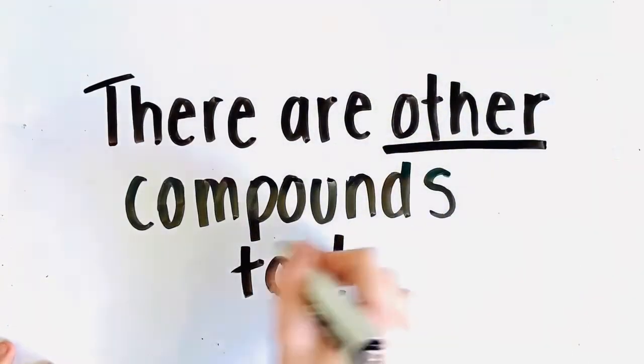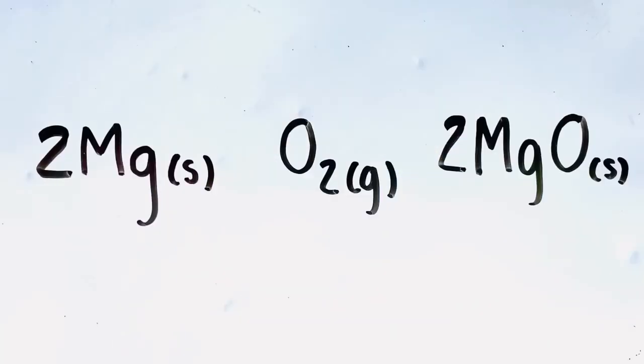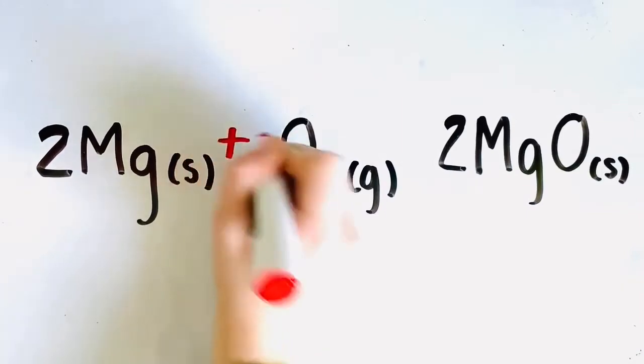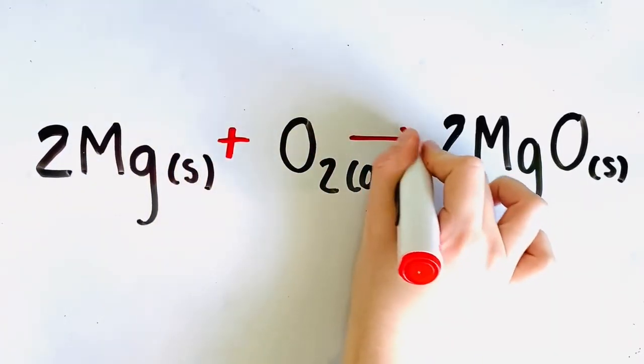Combustion reactions involve other compounds too. For example, magnesium combines with oxygen to form magnesium oxide.